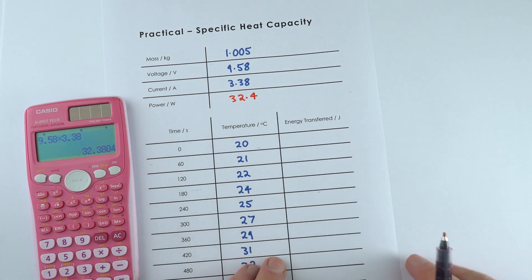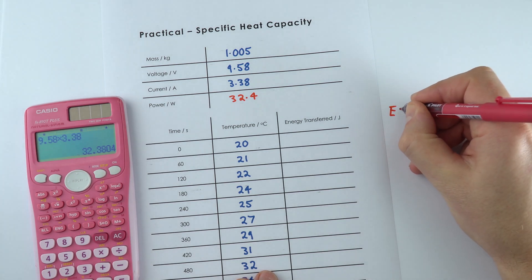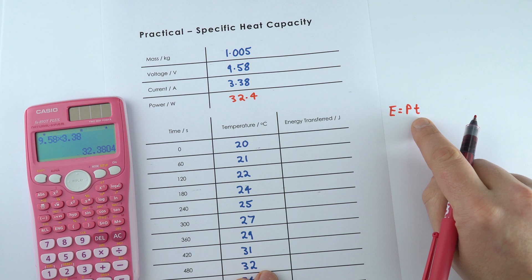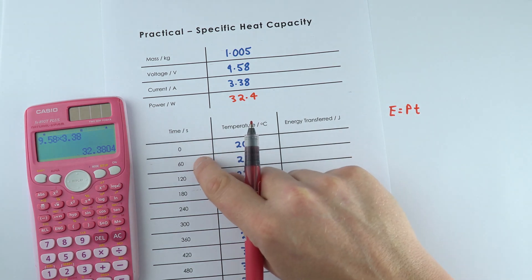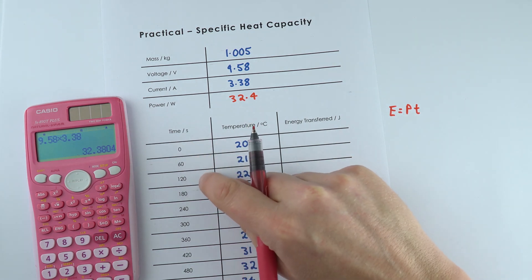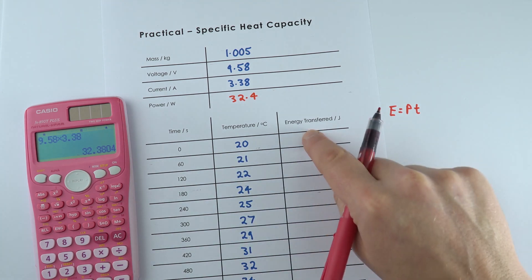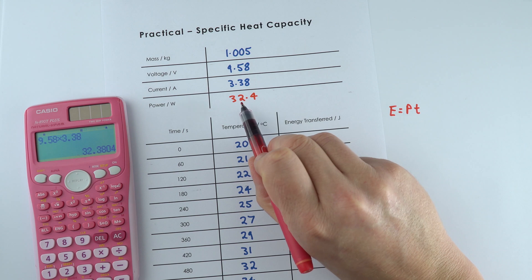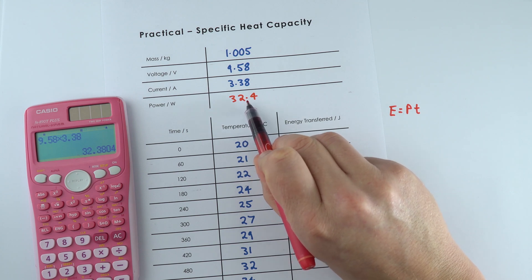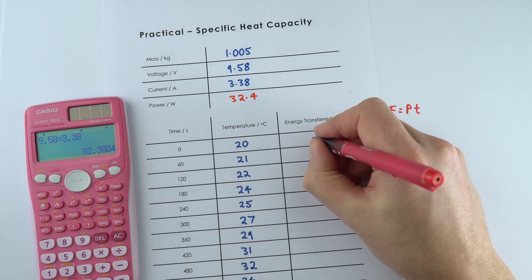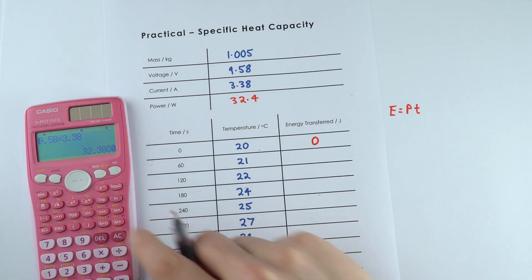Now to look at the total energy transferred, the energy transferred is equal to the power multiplied by the time. And here we've got time in seconds. So we've got 0, 60 seconds or 1 minute, 2 minutes, 3 minutes, and so on. So to get the values for the energy transferred in this column here, I'm going to multiply this number here, 32.4, by the number of seconds. So after 0 time, we had 0 energy transferred.